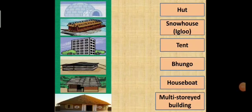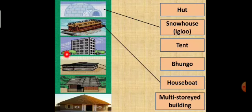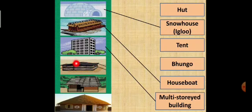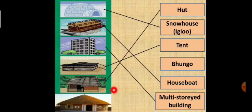Look at the pictures and match. So first picture is snow house, right? So you have to match. Now second one is houseboat. Now, which picture is this? Yes, multi-storied building. Now see this picture. Which picture is this? Yes, tent. Right? Now, see this picture. Yes, hut. And see this picture, last picture. Yes, it is called Bhungo.